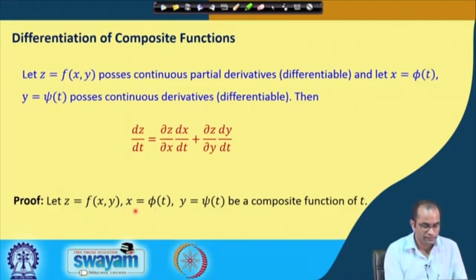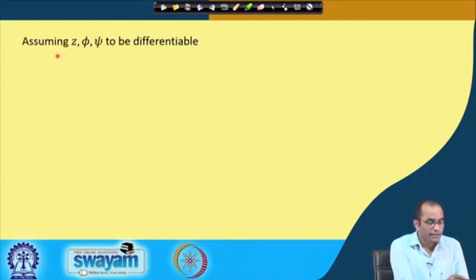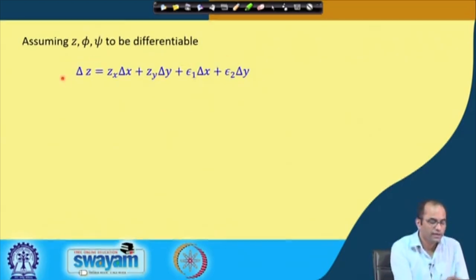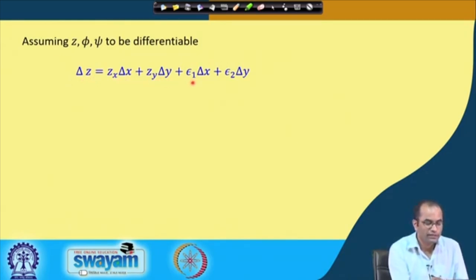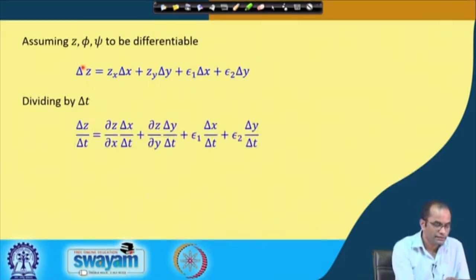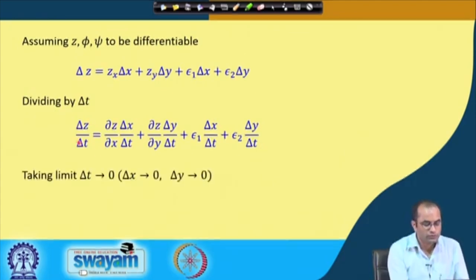Taking z = f(x, y) with x = φ(t) and y = ψ(t) as a composite function, and using the differentiability of z, φ, and ψ, we write Δz = (∂z/∂x)Δx + (∂z/∂y)Δy + ε₁Δx + ε₂Δy. Dividing both sides by Δt gives Δz/Δt expressed in terms of Δx/Δt and Δy/Δt. Taking the limit as Δt → 0 means Δx → 0 and Δy → 0.